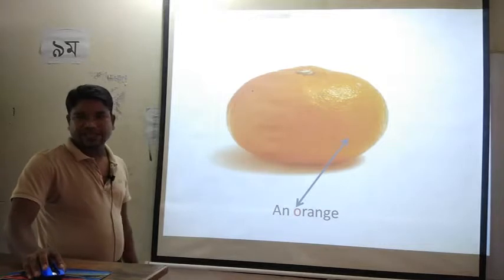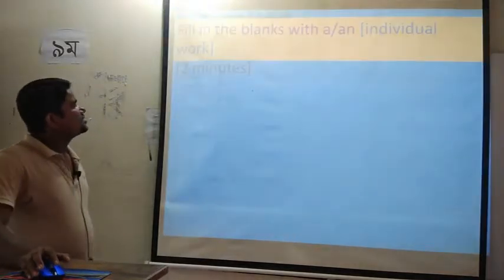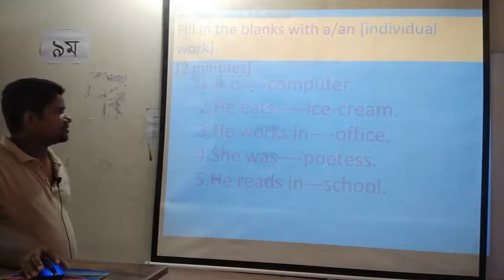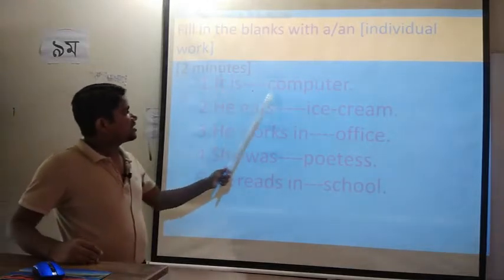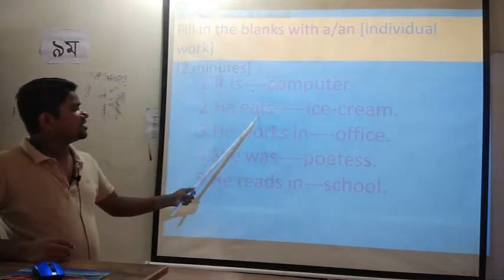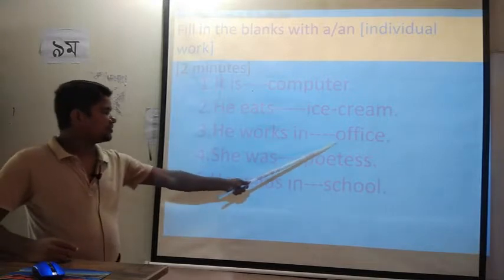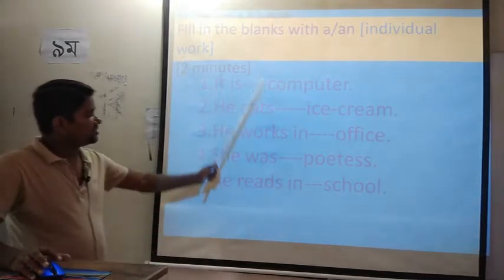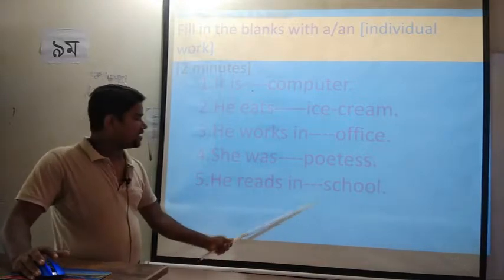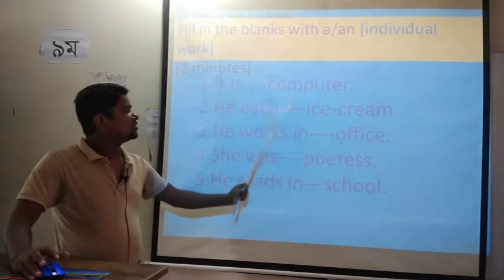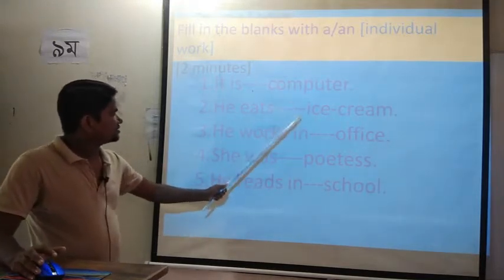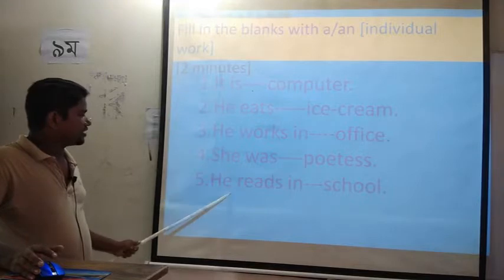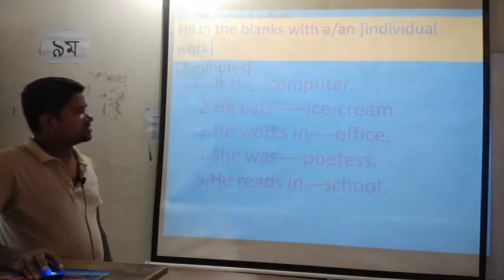Every word that starts with a vowel takes AN as its article. For example: it is a computer, it's an ice cream, he works in an office, he was a poetess, he reads in a school. Here, C, P, and S are consonants, and I and O are vowels — so in cases 2 and 3 the article is AN, and in cases 1, 4, and 5 the article is A.